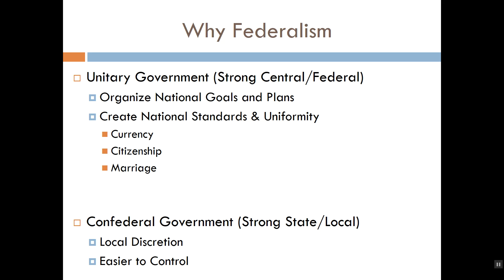What is a confederacy? If a unitary government concentrates all lawmaking authority in the hands of the central or federal government, the confederal system is the opposite — it concentrates virtually all lawmaking authority in the hands of the individual state governments. When you compare these two systems to one another, you'll find that each of them has its own set of strengths and weaknesses, as we discovered during the early stages of our nation's history.